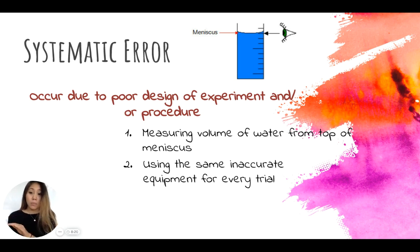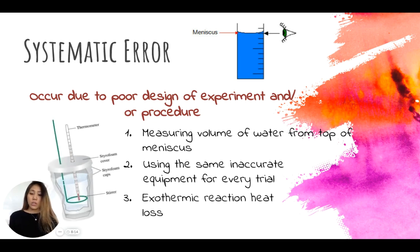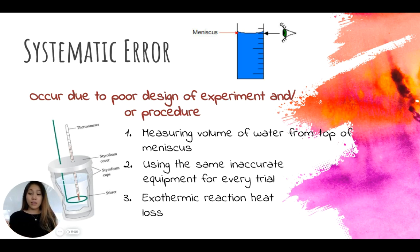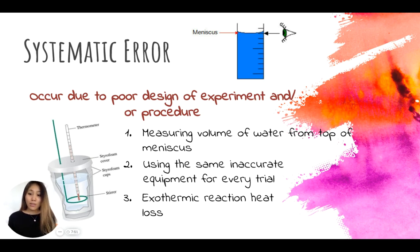Systematic means it happens every single time. Another example is an exothermic reaction — exothermic means releasing heat. If the chemical reaction you're conducting is exothermic, it's really hard to control that release of heat. That would be a systematic error as well, because heat is constantly being released throughout the reaction in every trial, so it is considered a systematic error.